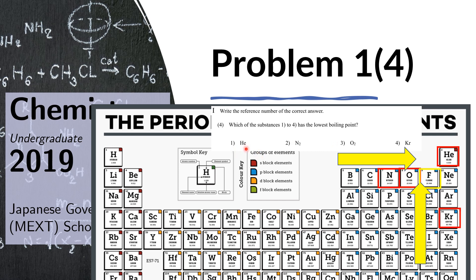We only have two noble gases here: helium and krypton. The smaller the noble gas, the more strongly its electrons are attracted to the nucleus, making it less likely for electrons to interact with other elements. Therefore, higher up in the group means weaker intermolecular forces, and the answer is helium.